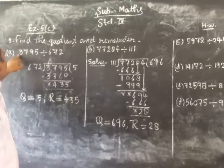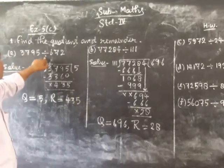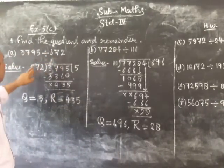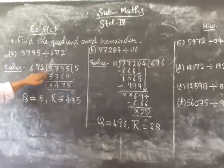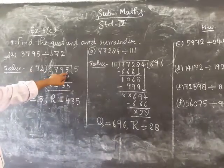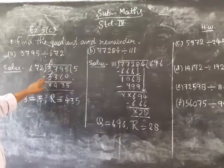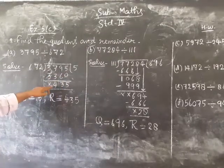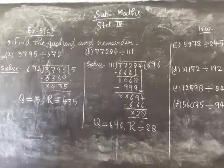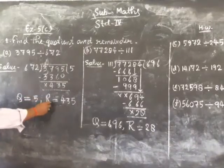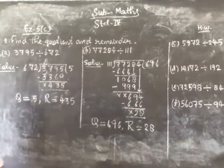Find the quotient and remainder. Problem (a): 2795 divided by 672. Solution: 672 goes into 2795 five times, 672 times 5 equals 3360 minus... So quotient equals 5 and remainder equals 435.